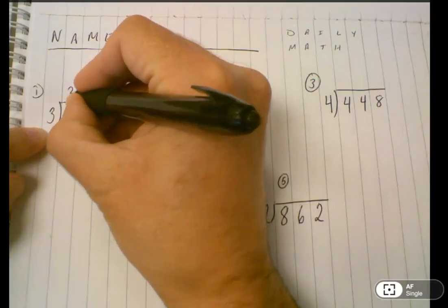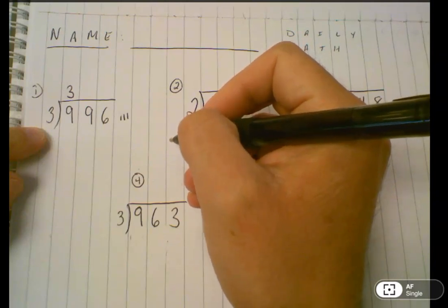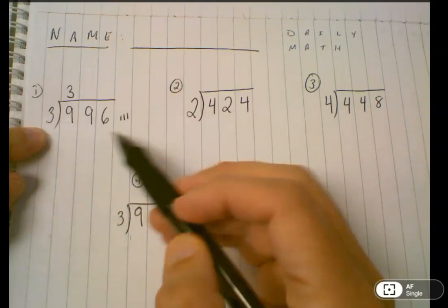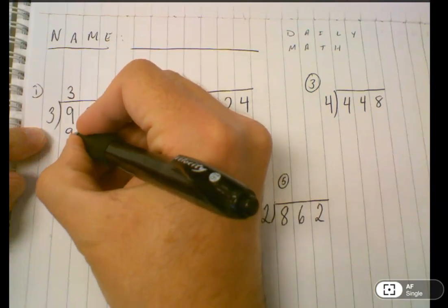So this three will go above the nine because it's the first part of our quotient. That's the division step. Then you multiply three times three to get nine. Some students like to think it's three times my tally mark of three, which is still nine. That goes underneath here.